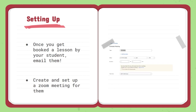Once your students do book your lesson, you should email them as soon as possible. One of the main reasons for this is to get to know them and to figure out how you are going to meet. Most students and tutors use Zoom, and so if you are using Zoom, you would email them your Zoom link for the meeting.